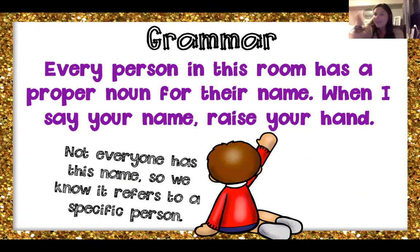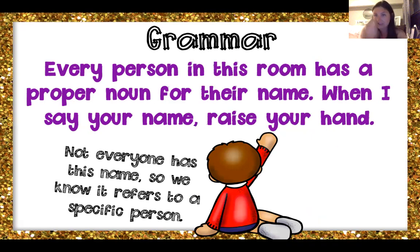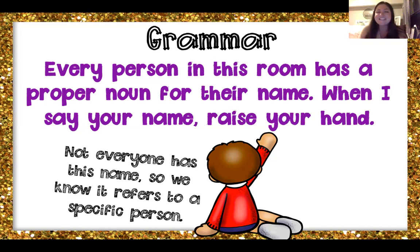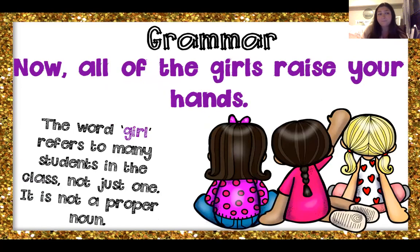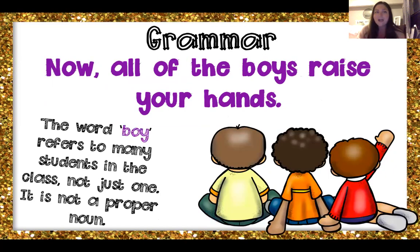So everybody has a proper noun, and that is your name. When I say your name, you know that you're the specific person I'm talking to. Just like if you say my name, Miss Catrone — I am a specific person, I'm a proper noun. If you just say teacher, you could be talking about any old teacher and I wouldn't know you're talking about me. That's why you say Miss Catrone and I'm the proper noun. Not everyone has this name, so we'll know who we're talking about. If I say girl, I could be talking about any girl watching this. But if I say your name, then I'm talking to you — you're the proper noun.